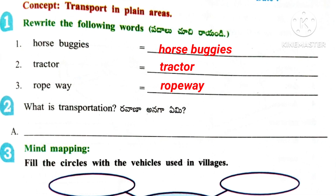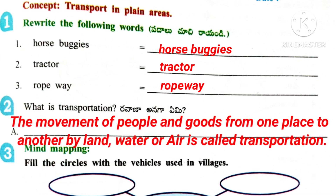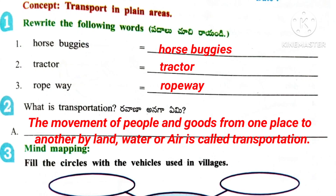2nd question: What is transportation? Answer: The movement of people and goods from one place to another by land, water or air is called transportation.